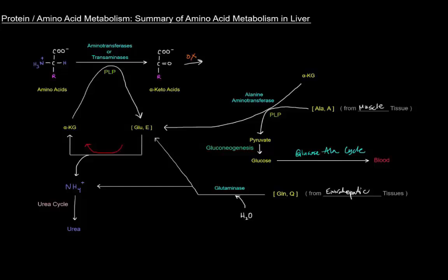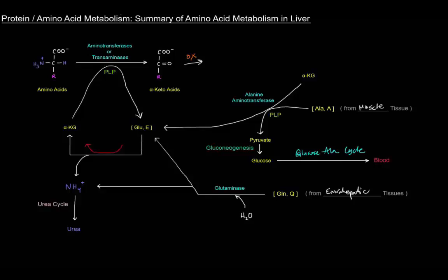That glutamate is basically carrying that nitrogen. Oxidative deamination via the glutamate dehydrogenase reaction, using NAD+ or NADP+, gives us NADH or NADPH and a free ammonium ion. That ammonium can be detoxified in the urea cycle to give urea, which can be safely excreted.